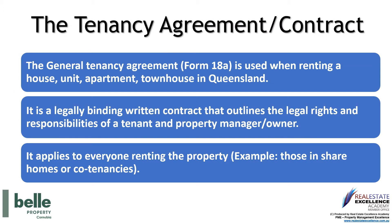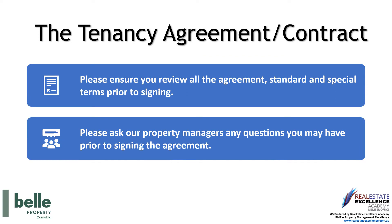The Form 18A is a legally binding contract between yourself and the property owner. Our agency manages the property on behalf of the lessor. The General Tenancy Agreement is used when renting a house, unit, apartment, or townhouse in Queensland. It is a legally binding written contract that outlines the legal rights and responsibilities of the tenant, the property owner, and our agency. The Form 18A is made up of standard terms, which are the law and non-negotiable, as well as special terms. Please ensure you review all of the agreement prior to signing and ask our property managers any questions before signing.